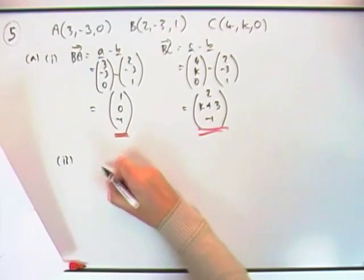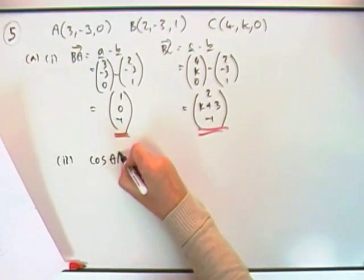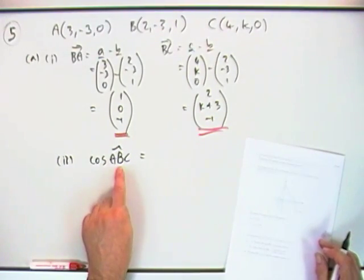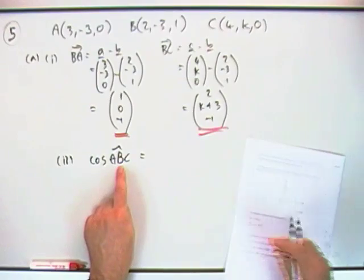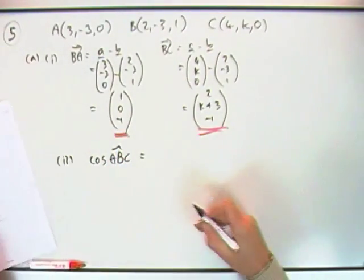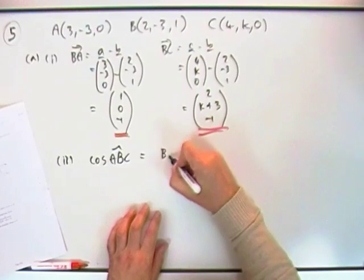So cos(ABC)—to define the angle, the vectors radiating away from B, I've got BA and I've got BC. So that's fine. To find that I can go straight in with the scalar product: I've got BA dot BC over the length of BA times the length of BC.